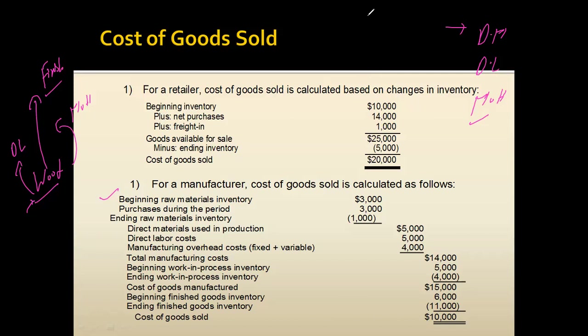On the basis of traceability we define direct material. In furniture manufacturing, wood is the best example — when making one table we have an exact measurement of how much wood we use. However, for polish, say you use 10 buckets to polish 100 tables — you have an average quantity but not the exact quantity per table. Materials not traceable on a per unit basis are defined as indirect materials, and these are categorized under manufacturing overhead.